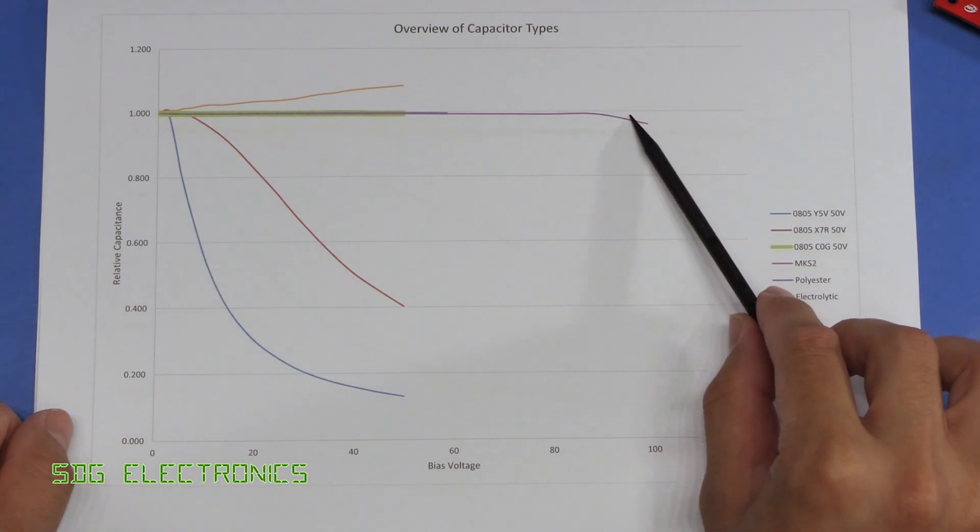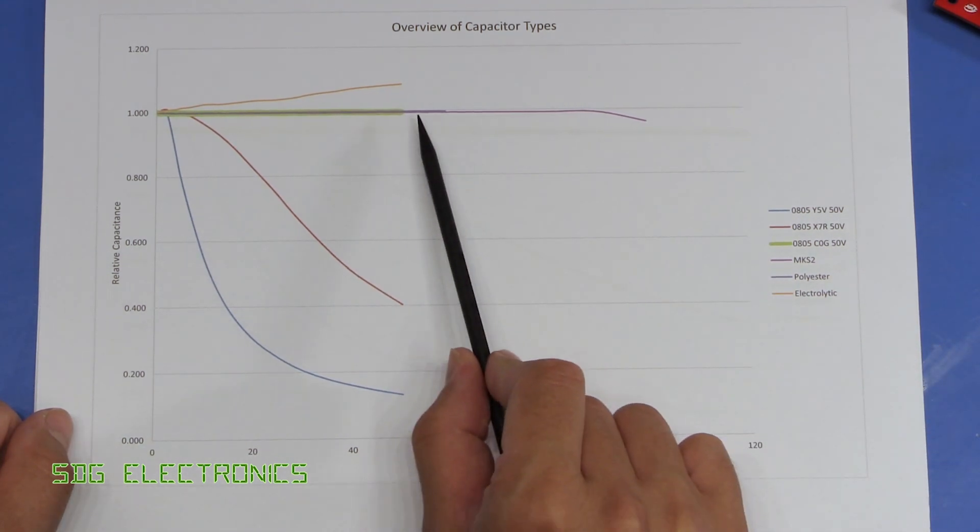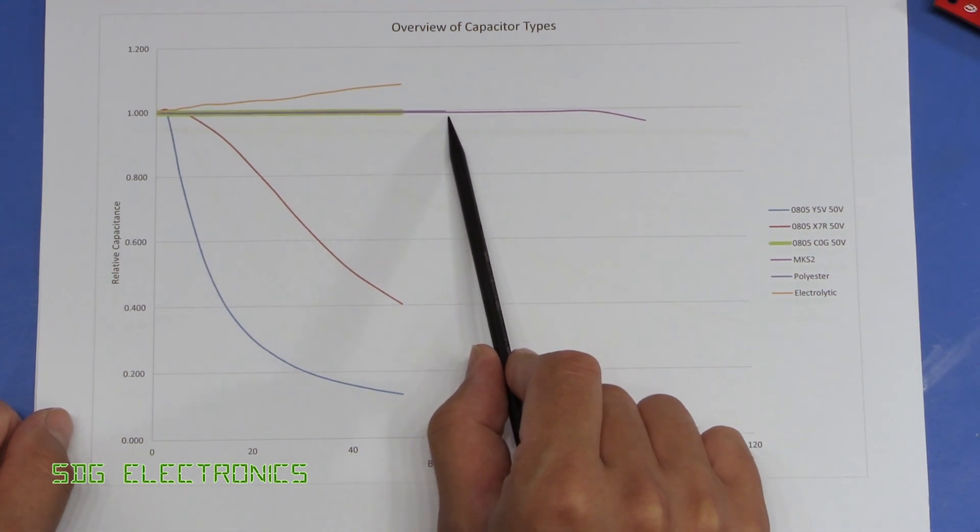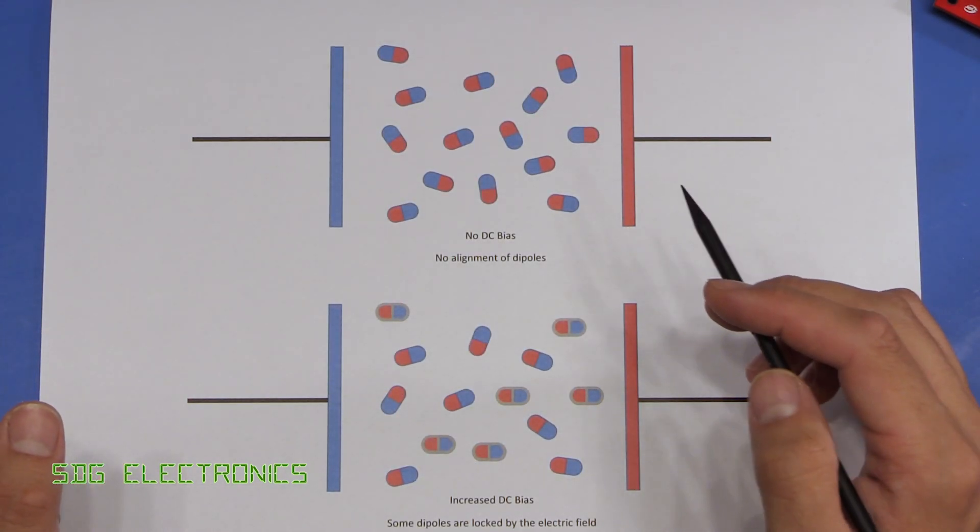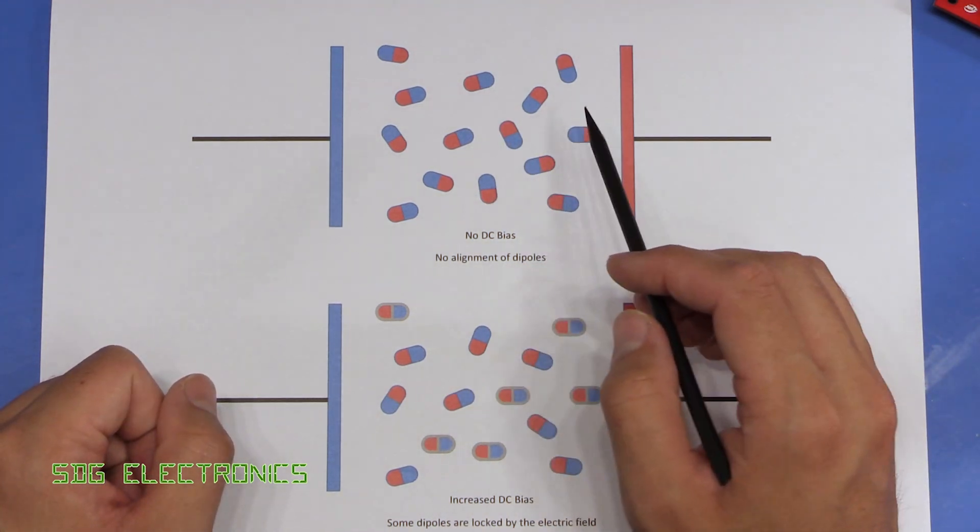So at 100 volts it had just started to tail off there, but the WIMA MKS2 was stable all the way up to its maximum working voltage. So what is it about the ceramic capacitors that causes the capacitance to decrease with DC bias applied to the capacitor plates?